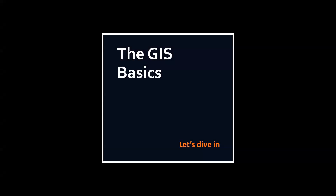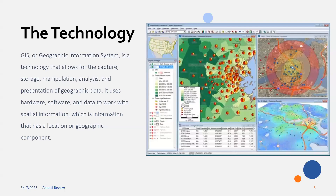So the GIS basics — let's dive in. GIS technology, or geographic information systems, is a technology that allows the capture, storage, manipulation, analysis, and presentation of geographic data to work with spatial information — information that has a location or geographic component. Later in the slideshow we'll discuss how some of that data is acquired and can be used. As you can see in the image, the data is visually displayed within a software system.